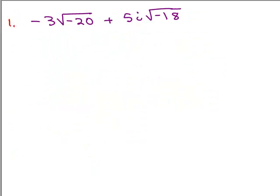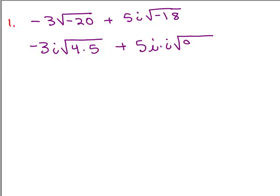Let's start with number one. In both of these, I have a negative number under the square root. So I want to rewrite that as i times the square root of 20, and then write that as 4 times 5 underneath the square root. Over here, I have 5i. Because of the negative number under the square root, I can take an i out and write the square root of 18, which I'll write as 9 times 2. From the first, I can take a 2 out, and from the second, a 3. On the outside, I've got negative 3 times 2, so that's negative 6i times the square root of 5.